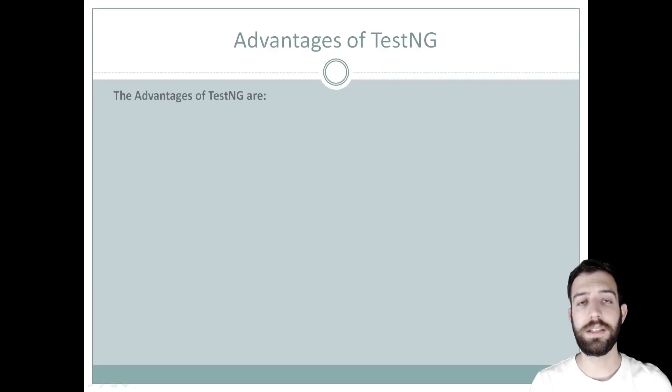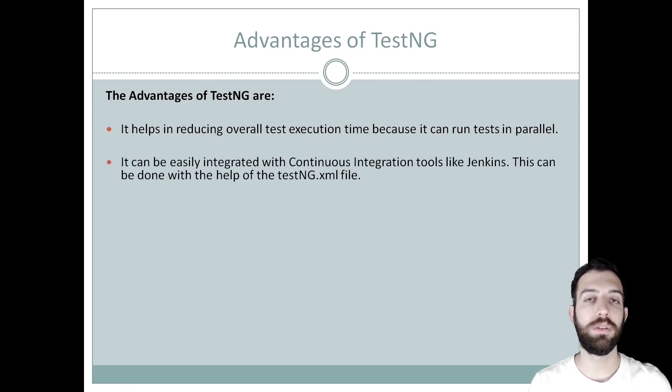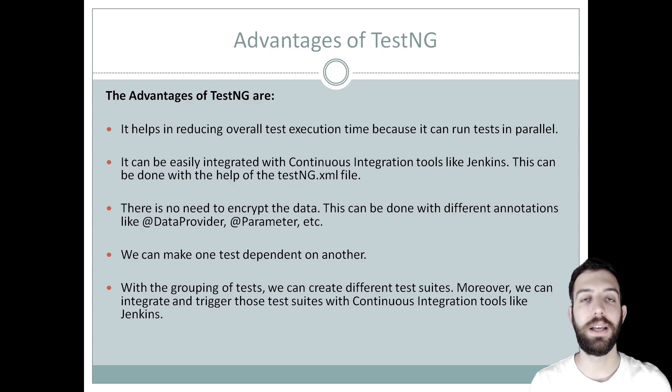The advantages of TestNG are: at first, it can reduce the overall test execution time because it can run tests in parallel. Secondly, it can be easily integrated with continuous integration tools like Jenkins. This could be done easier with the help of TestNG XML file. Third, there is no need to encrypt the data. This could be done easier with the help of the annotations, such as data provider parameter. Also, we can make one test dependent to another. And last, with a grouping test, we can create different test switches like regression and smoke. And moreover, we can integrate and trigger those test switches with continuous integration tools like Jenkins.